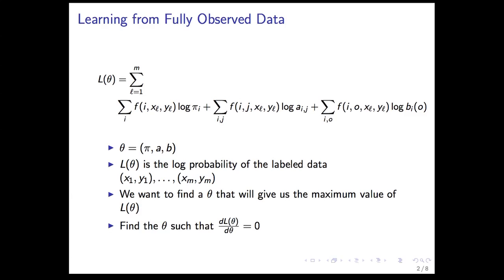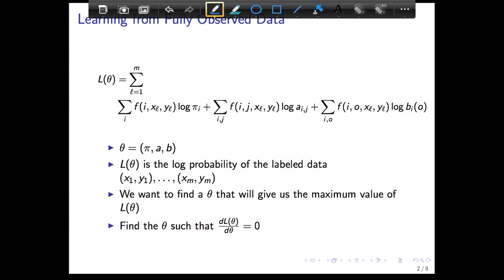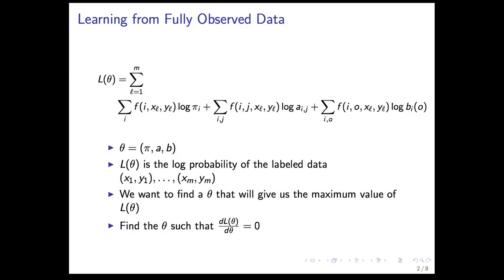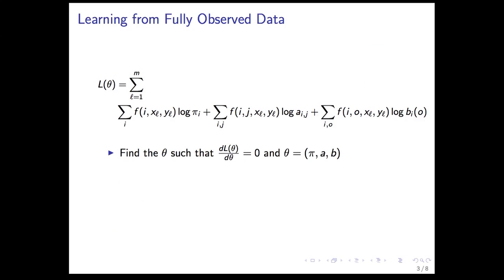The way to do that is to look for a value of theta where there is no more improvement in L of theta. Basically, the rate of change is zero. If it's a very simple likelihood function that looks like this in two dimensions, clearly we know where the best point is. That corresponds to the point where the derivative is going to be zero, the point that touches the tangent. All we need to do is find the derivative, set it to zero, and that will be the theta we're looking for.